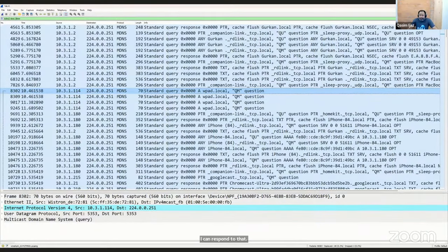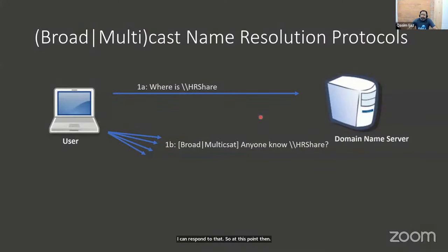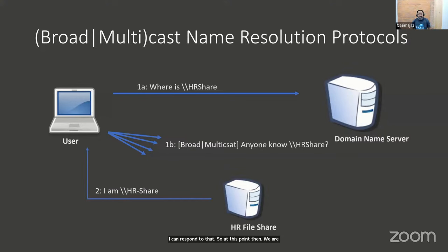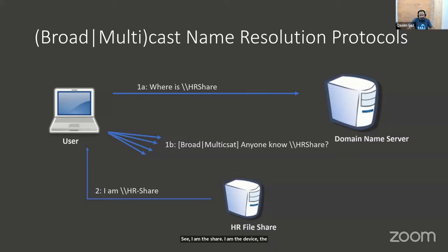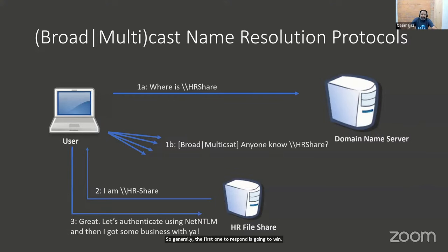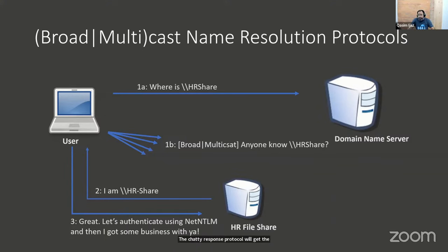At this point, we receive these name resolution requests and we respond to them, saying 'I am the share, I am the device the name you are looking for.' This is a broadcast or multicast request, so generally the first one to respond wins. The result of that is the NetNTLM authentication we were talking about — the challenge-response protocol — and we get the NetNTLM hash by responding.